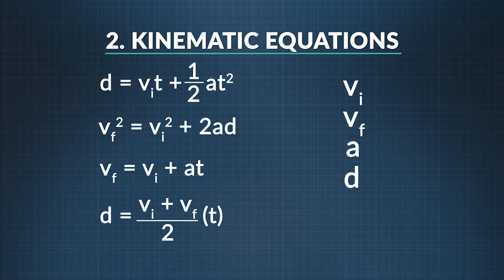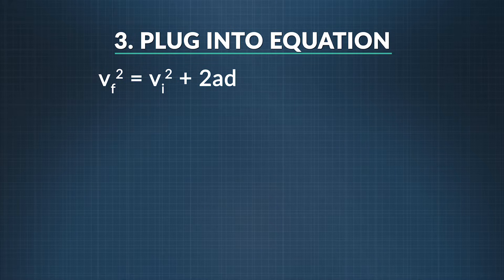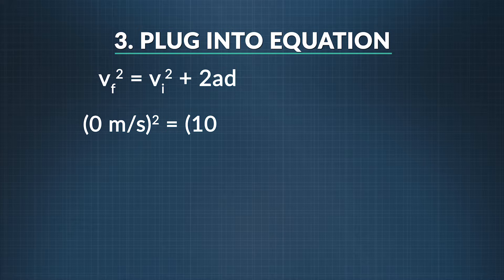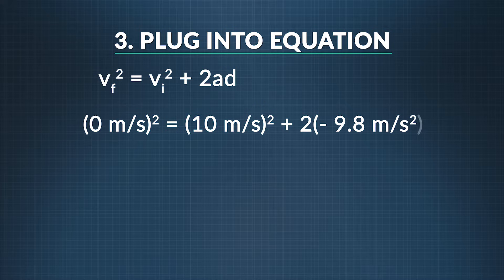Now let's do step three: plugging in all of the variables that we know, along with the symbol d representing the thing we are solving for, displacement. Our final velocity is zero meters per second, squared. This is equal to ten meters per second, squared, plus two times negative 9.8 times the displacement.